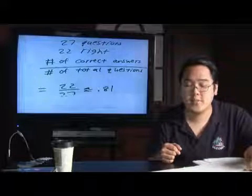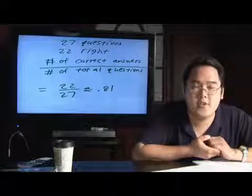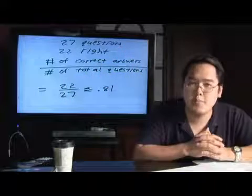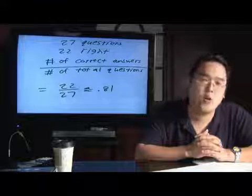And so basically, if you want, you can use a calculator to figure it out for you. 22 over 27, round to let's just say two decimal places to keep things simple and you'll find out that 22 over 27 is approximately .81.